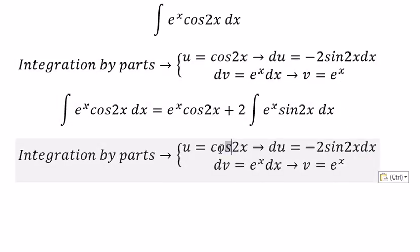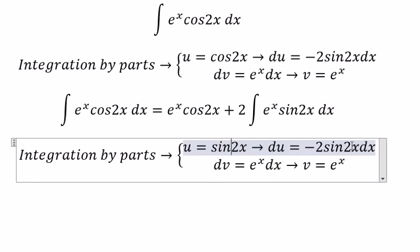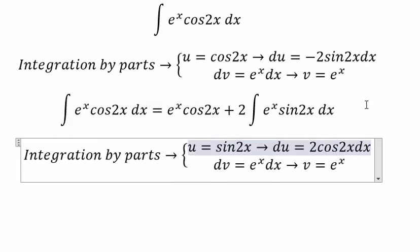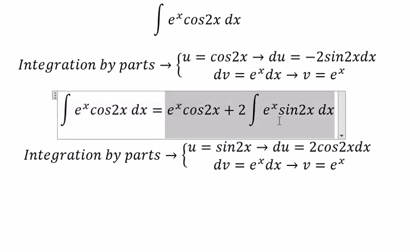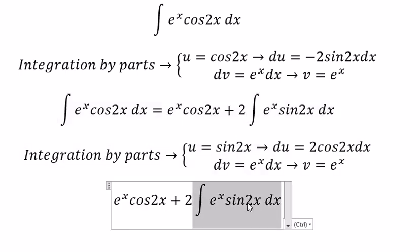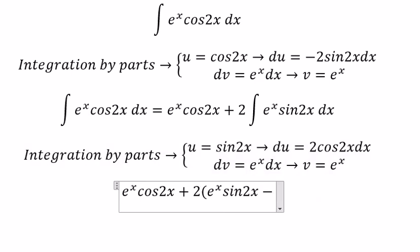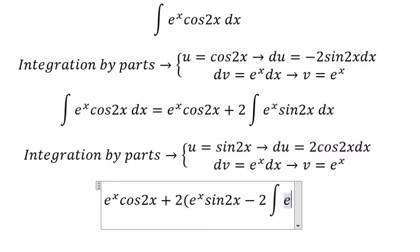We need to use integration by parts again with u = sin2x, which gives du = 2cos2x dx. We get UV minus 2 times the integral of e^x cos2x dx.